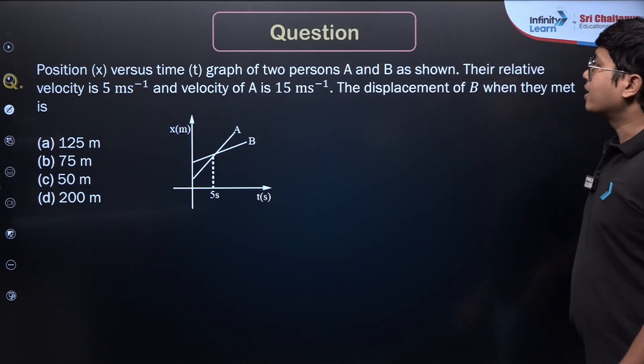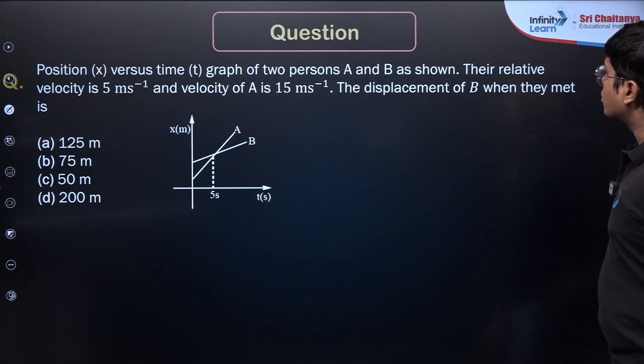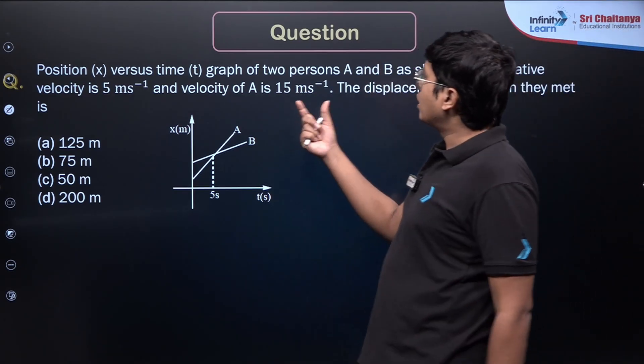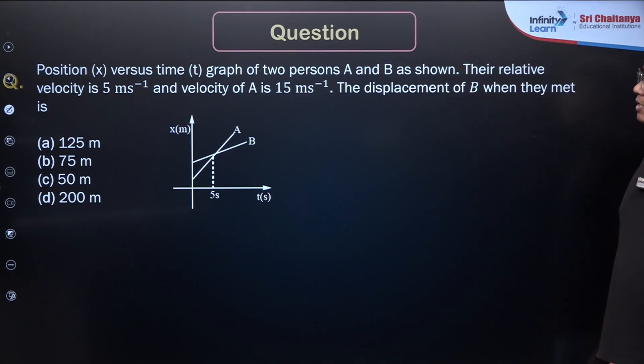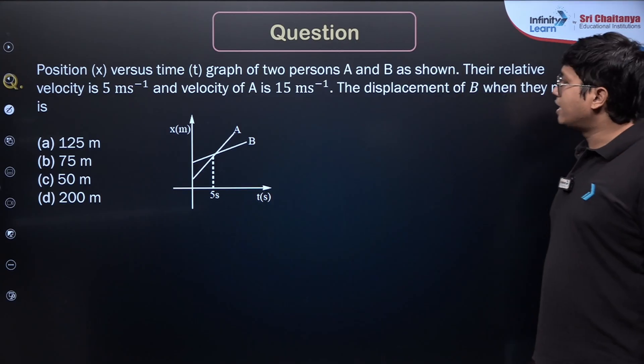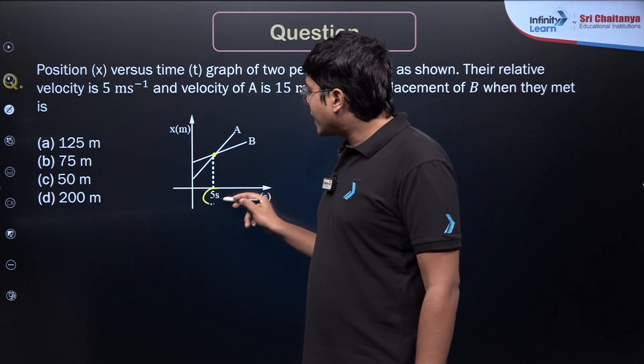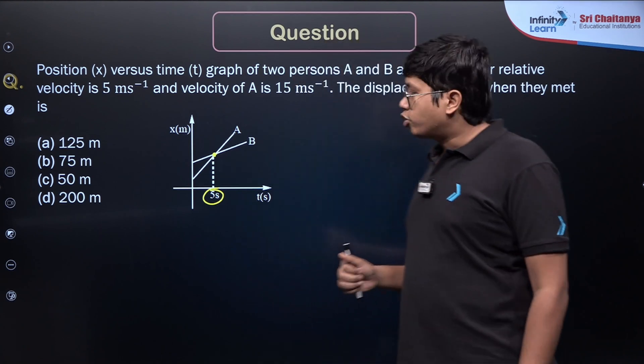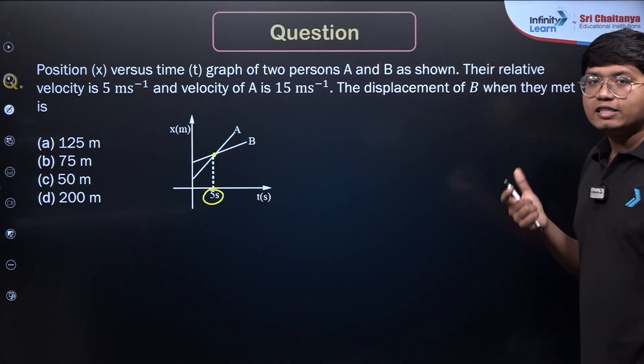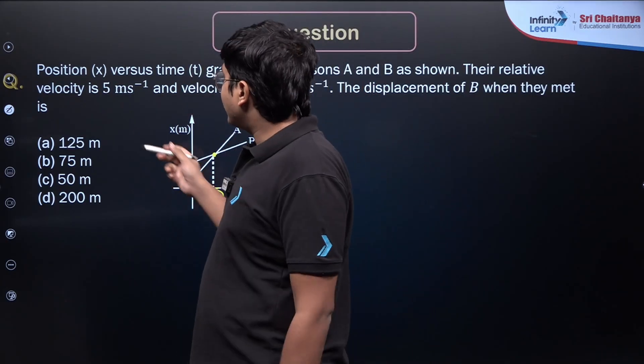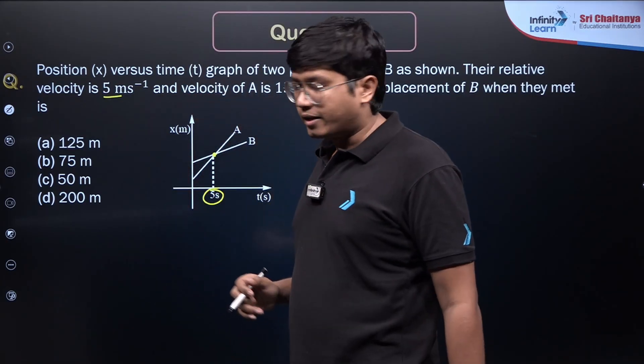Next, position X versus time graph of 2 persons A and B are shown. Their relative velocity is 5 meters per second, and the velocity of A is 15 meters per second. The displacement of B when they meet is how much? So it is shown here that when they meet, that time is 5 seconds. So to get the displacement of B, I just need to find what the velocity of B is. How do I do it? See, the relative velocity is 5 meters per second.